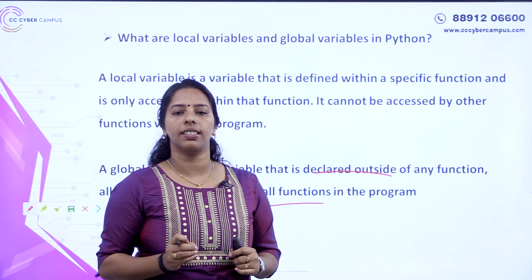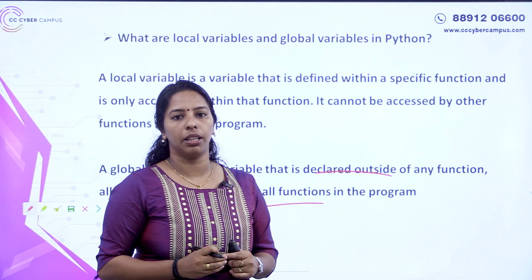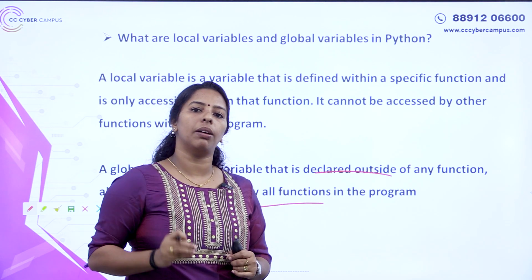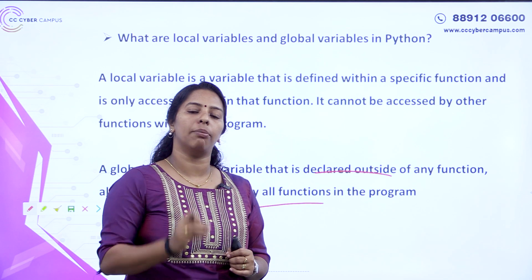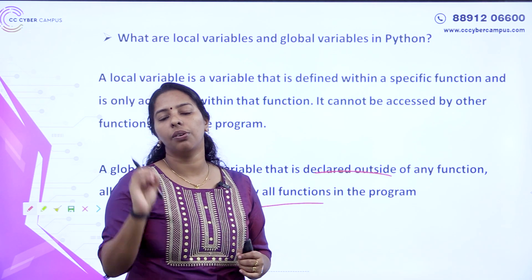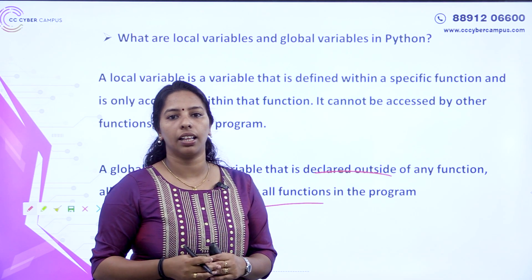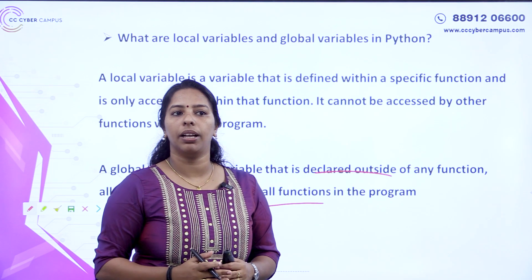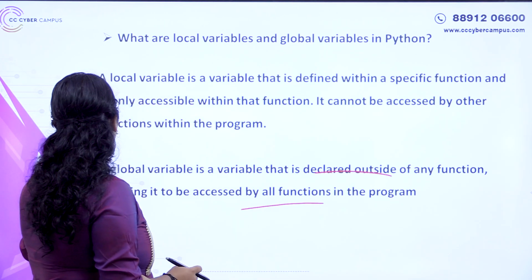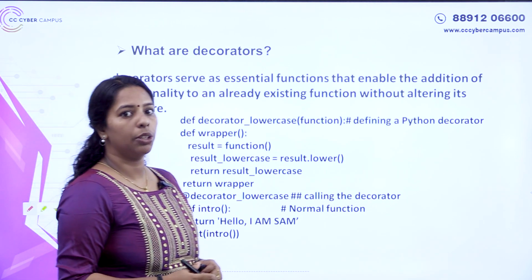A global variable allows it to be accessed by all functions in a program. We use this function as a global variable. We define this function as a variable. Now, let's go to the next question: Decorators.